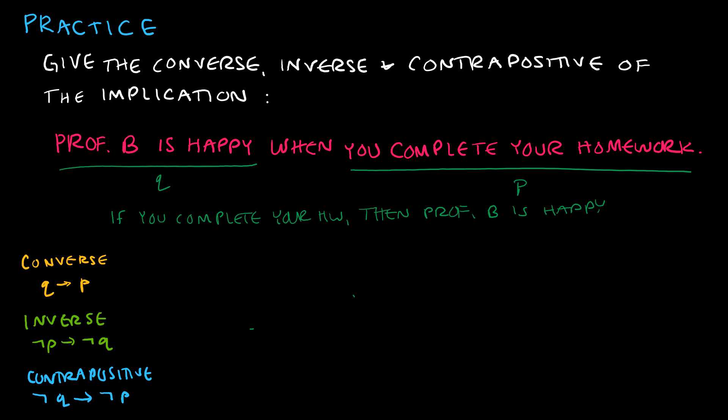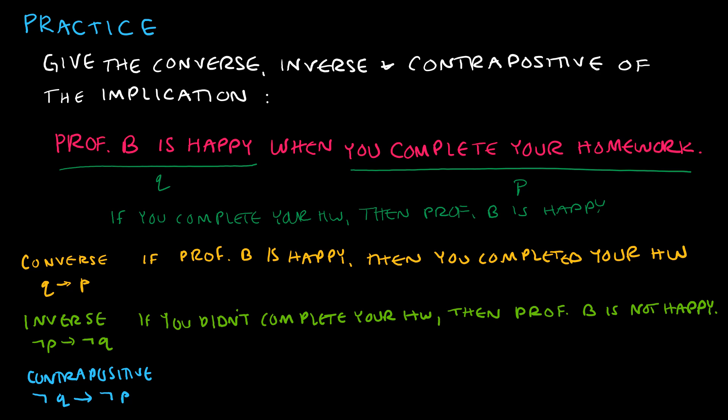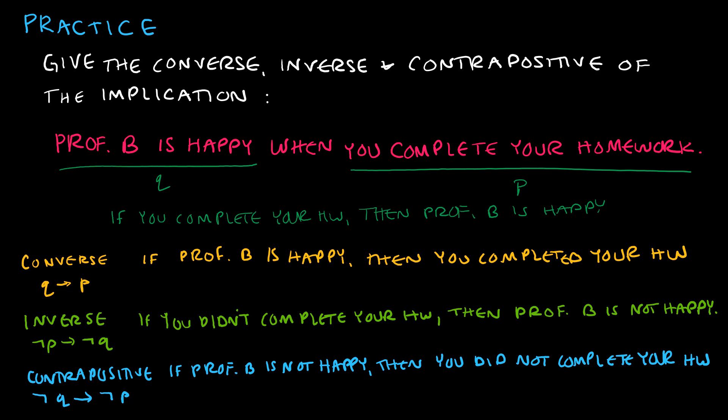With the if-then form established, finding the converse, inverse, and contrapositive is straightforward. Converse (if q then p): 'If Professor B is happy, then you completed your homework.' Inverse (if not p then not q): 'If you did not complete your homework, then Professor B is not happy.' Contrapositive (if not q then not p): 'If Professor B is not happy, then you did not complete your homework.' It all stems from writing the initial implication in proper form.